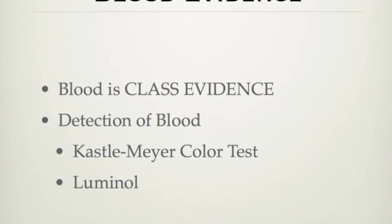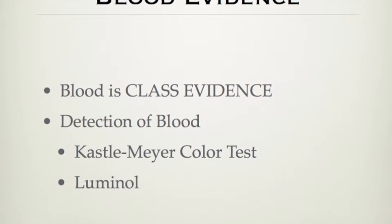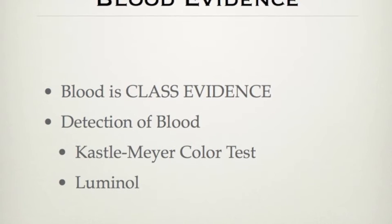Blood is class evidence, which means you associate it with a group of people and not individuals. The detection of blood is done through two different tests: the Kastle-Meyer color test and luminol.